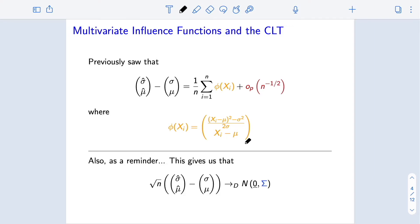In addition, using this, we saw that if we scale this difference up by square root of n, this piece disappears, we are left with this piece, and so this standardized difference will converge in distribution to a mean zero multivariate Gaussian with covariance matrix that can be calculated from this influence function. In particular, it's the expectation of the outer product of this influence function with itself.